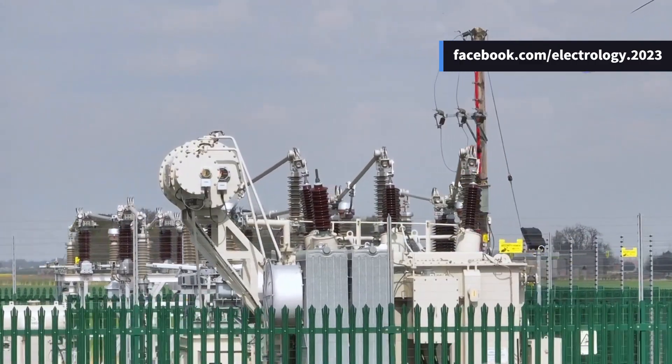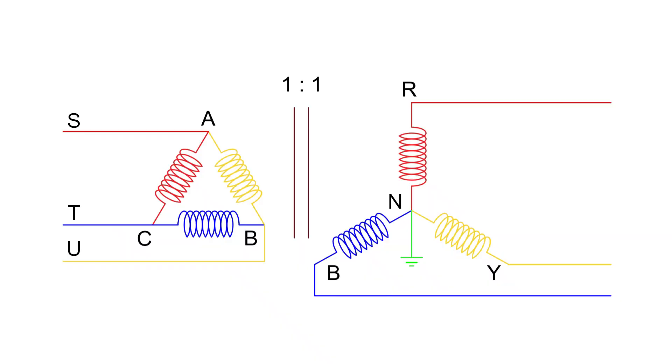To understand the need for zero-sequence filtering, let's consider a delta-star transformer with a voltage ratio of 1 to 1. We assume a 1 to 1 ratio just to keep things simple. Now, suppose a single line-to-ground fault occurs in the R phase on the secondary side of the transformer.